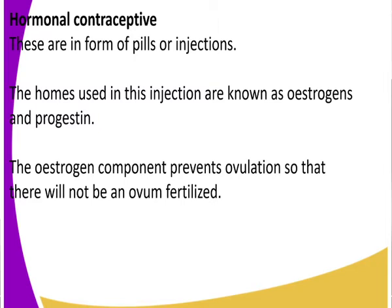The oestrogen component prevents ovulation so that there will be no ovum fertilized. Remember, oestrogen is the hormone that allows movement of an ovum from the ovary all along through the fallopian tube for fertilization. But if a hormonal pill is induced, it prevents that movement of an ovum.